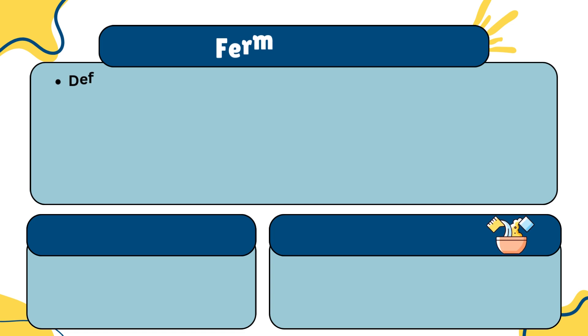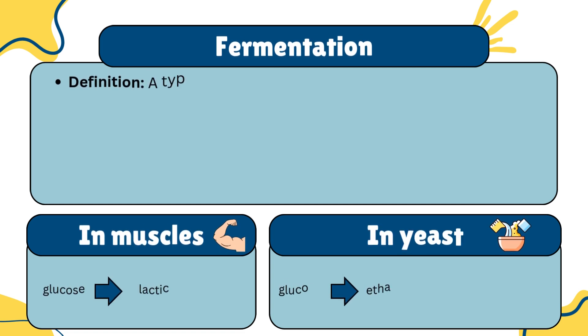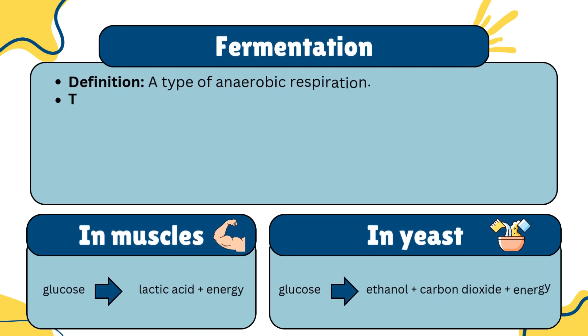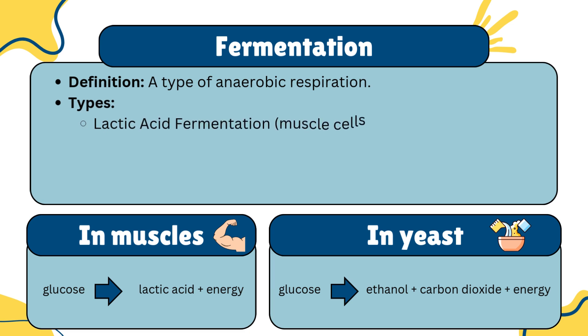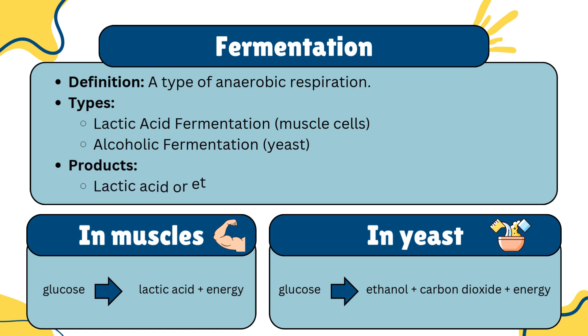Fermentation is a specific type of anaerobic respiration. In muscle cells, it leads to lactic acid fermentation, while yeast undergoes alcoholic fermentation, producing ethanol and carbon dioxide. This process allows cells to generate energy when oxygen is scarce.